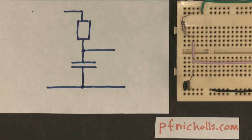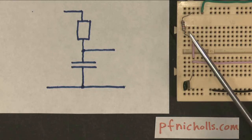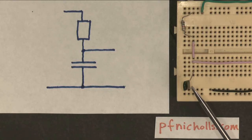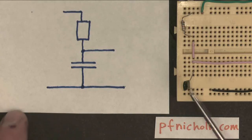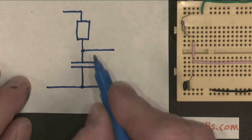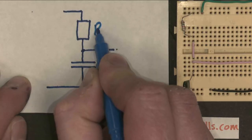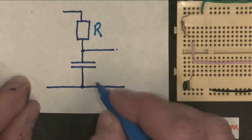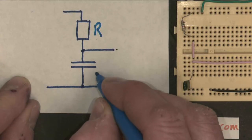What we're looking at in this video is a very straightforward circuit with a resistor and a capacitor. When I draw it, it looks like this — we should recognize it. It looks like a potential divider. At the top of the circuit we have a resistor, but instead of having another resistor lower down in the potential divider, we have a capacitor.